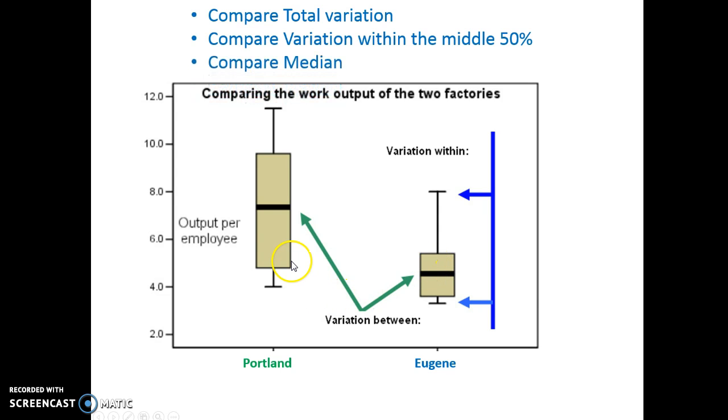I can also compare my median. So here's key. I'm starting to worry about this company because it's got so much variation, the one in Portland. But I noticed the median. Overall, they are producing about 7 units, while in Eugene they're only producing close to 5. So even though this one has a lot more variation going on, it's all above. So I'd still prefer this company.